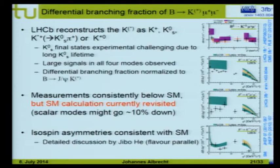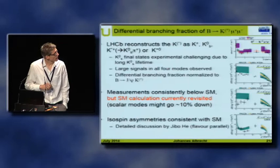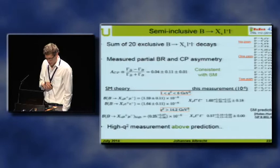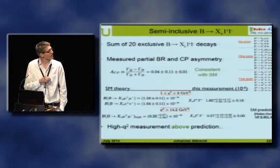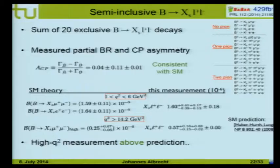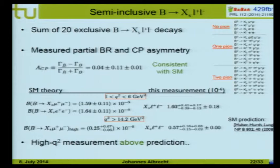Not only the LHC experiments but also the B factories have measured these transitions. A semi-inclusive analysis from BaBar — B→XsLL summed over 20 exclusive modes with both muons and electrons — measures the partial branching fraction and CP asymmetry. The CP asymmetry is found consistent with the standard model. The branching fraction in the lower q² bin is in very good agreement with the standard model prediction; the higher q² bin is within one sigma but slightly above.